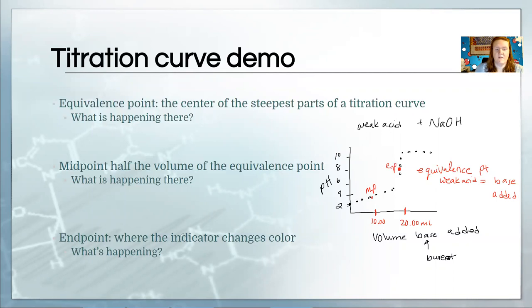Okay. Then finally, our endpoint is wherever the color change happens of our indicator. So phenolphthalein tends to change around nine. So our endpoint in this case is probably going to be a little bit higher than the equivalence point for this particular graph that I drew. You're going to mark that on there. So make sure to write it down when you go to lab.